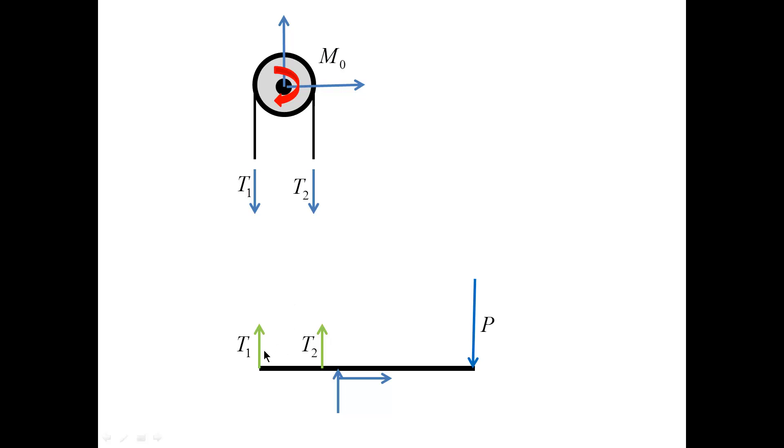For the beam, we have the forces T1 and T2 related to the forces introduced in the previous free body diagram, the forces at the pin, and the applied load P necessary for brake.